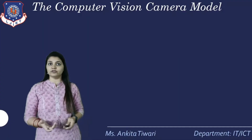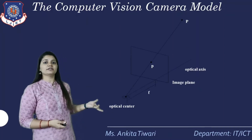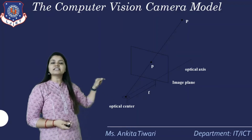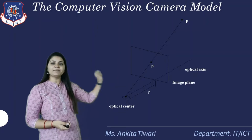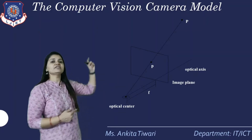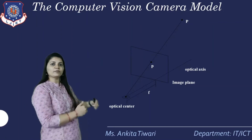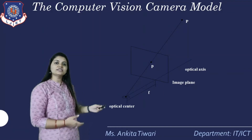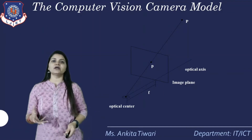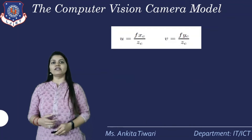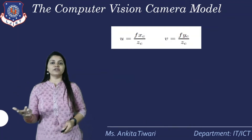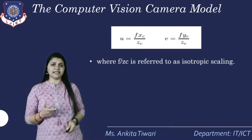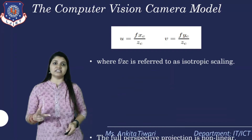First, what is the computer vision camera model? The camera model has an optical center, and with respect to that we have an optical frame. We can see the image frame where P is the center point, defined with the projection point P — a direct projection from the optical center to the beam point with respect to the focal distance. In the camera model we have two parameters defined with U and F, where U = F·Xc/Zc or F·Yc/Zc.